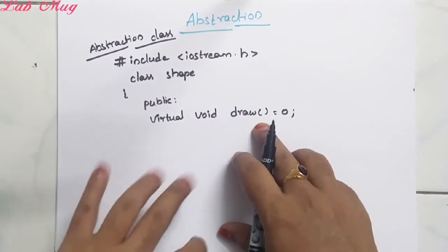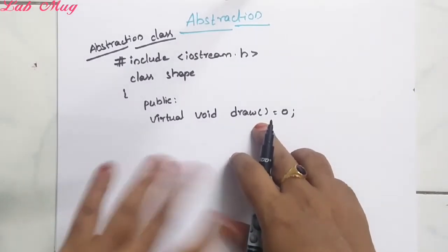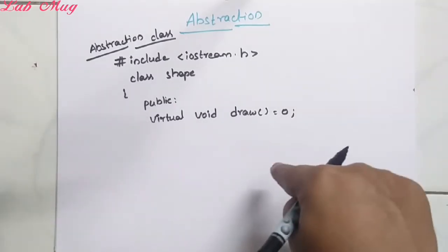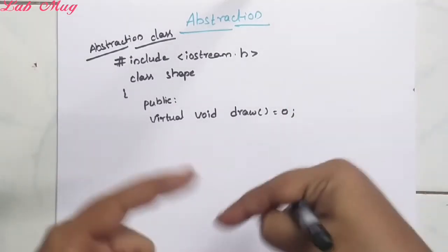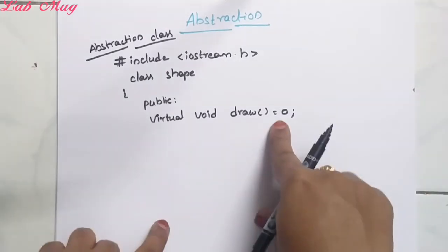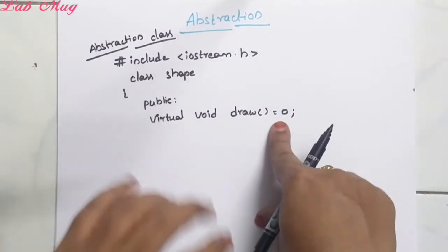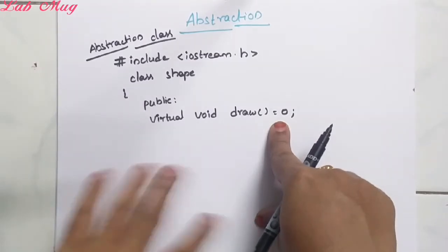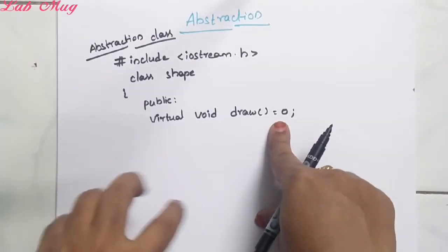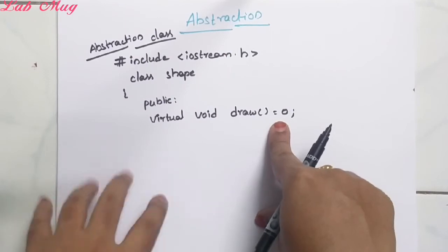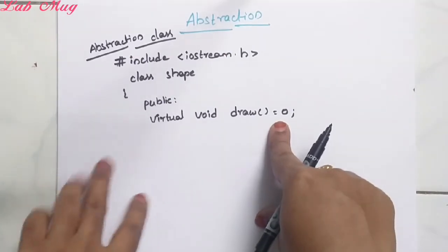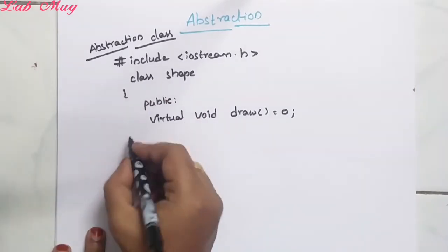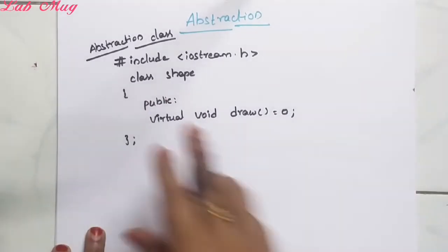Virtual, return type void, next function name draw, equal to zero. So ikkada epppudu ithe manam virtual function equal to zero anedi epppudu ithe, its meaning is that it must compulsorily be defined in the derived class. When we assign a virtual function equal to zero, that is a pure virtual function - it must be provided by the derived class.